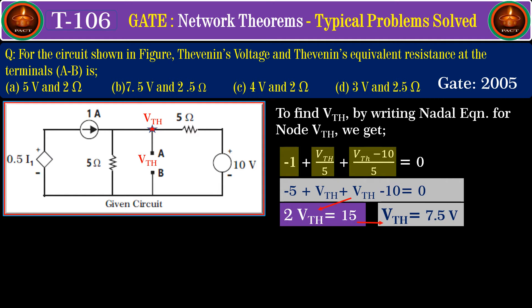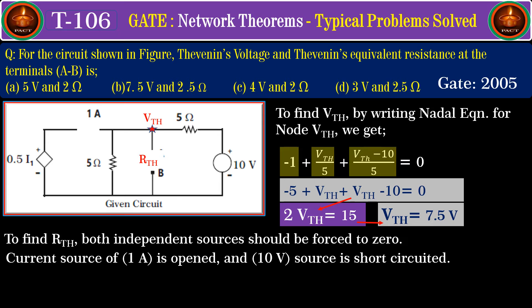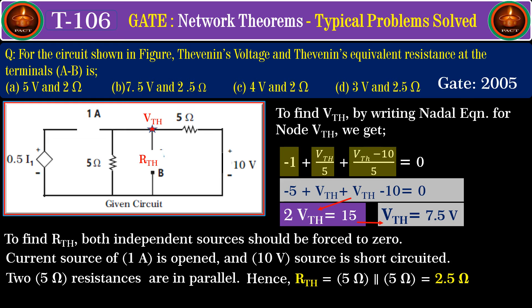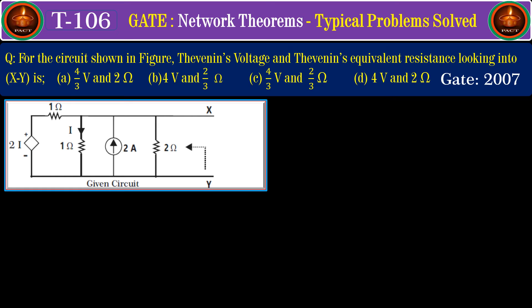Solving the nodal equation gives phi_thevenin equals 7.5 volts. To find R_thevenin, force both independent sources to zero — the current source is opened and the voltage source is short-circuited. The current-controlled current source of 0.5 I1 is then open and has no effect. The two five-ohm resistors are in parallel, giving an equivalent of 2.5 ohms. Hence R_thevenin equals 2.5 ohms, and option B is the correct answer.